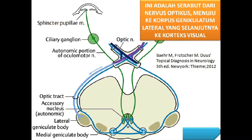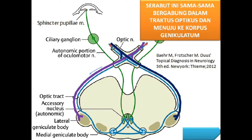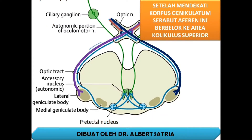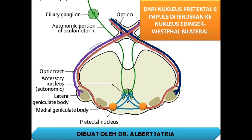Serabut dari nervus opticus menuju ke korpus geniculatum lateral yang selanjutnya ke korteks visual. Ada serabut aferen lain yang berjalan bersama serabut nervus opticus, bergabung dalam traktus opticus. Setelah mendekati korpus geniculatum, serabut aferen ini berbelok ke area kolikulus superior dan kontak dengan nukleus pretektalis. Dari nukleus pretektalis, impuls diteruskan ke nukleus Edinger-Westphal bilateral.